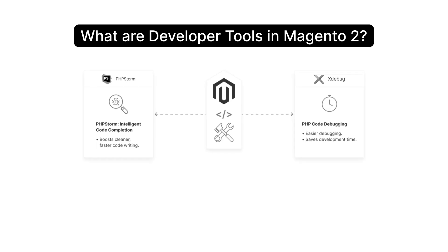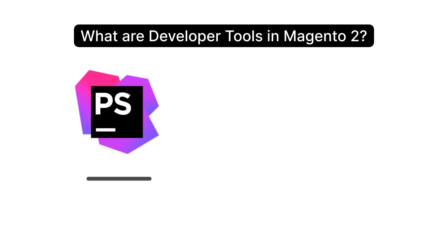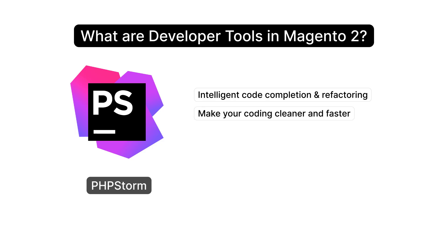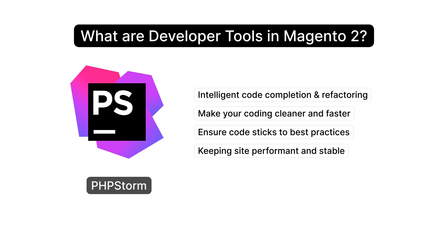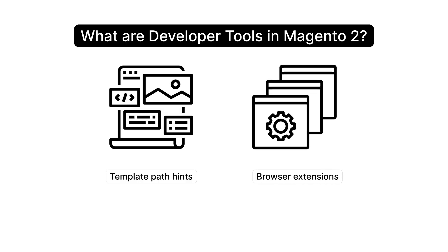With tools like PHPStorm and XDebug at your disposal, you can streamline your development workflow, save precious time, and boost your overall efficiency. Use IDEs like PHPStorm, which offer intelligent code completion and refactoring to make your coding cleaner and faster. These tools help ensure that your code sticks to best practices, keeping your site both performant and stable. From template path hints to browser extensions, you've got what you need to customize and debug the Magento front-end with ease.